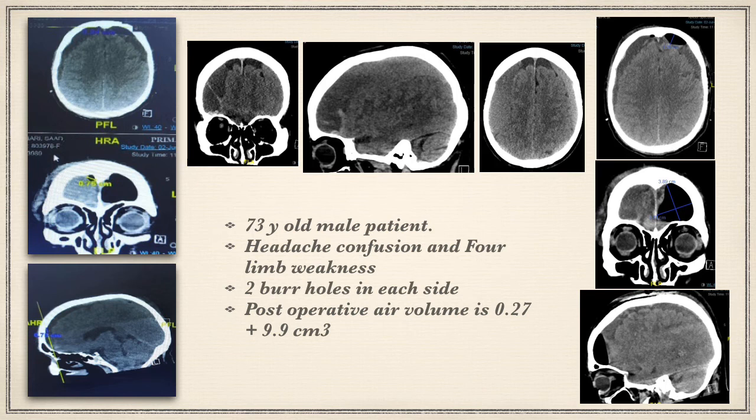Here we have a 73-year-old male patient presented with headache, confusion, and forelimb weakness. His CT scan showed bilateral chronic subdural hematoma, more on the right side. He was operated by two burr holes on each side, and the postoperative air volumes were 0.27 and 9.9 cubic centimeters respectively.